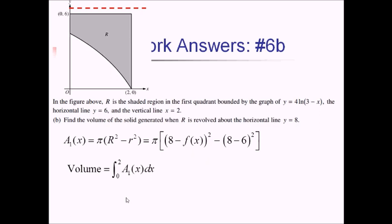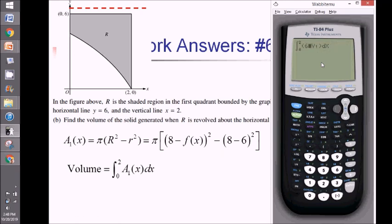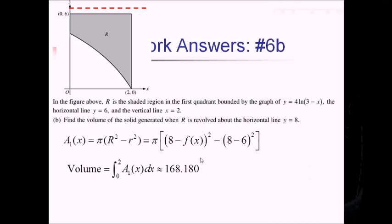I'm going to do the heavy lifting in my y equals — putting the whole area function in as y2. I've got pi times 8 minus y1 quantity squared, minus 4 (since 8 minus 6 equals 2, squared is 4). Quitting out, I'll do math 9 and grab my previous integral from 0 to 2, replacing the integrand with alpha trace y2 for this new area function, dx. That gives 168.1795.